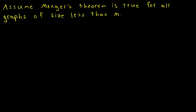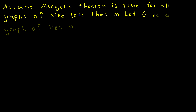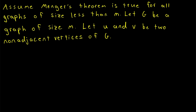Then let's move on to the induction step. For the induction step, we assume that Menger's theorem is true for all graphs of size less than M, where M is some natural number greater than zero. Then to complete the proof, all we have to do is prove the theorem is also true for all graphs of size M. So let G be a graph of size M. Menger's theorem is about any pair of non-adjacent vertices, so let u and v be non-adjacent vertices of G. To prove the theorem, we need to show that the minimum cardinality of a u-v separating set equals the maximum number of internally disjoint u-v paths.